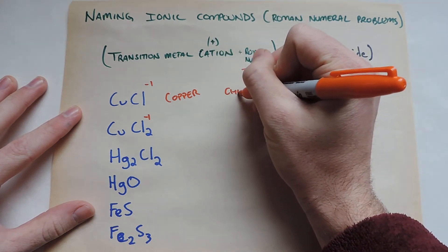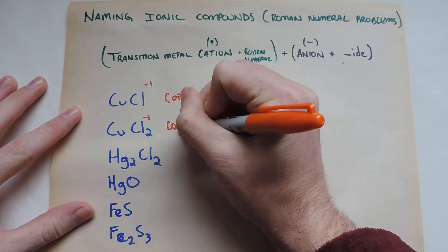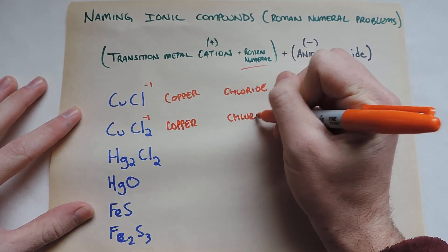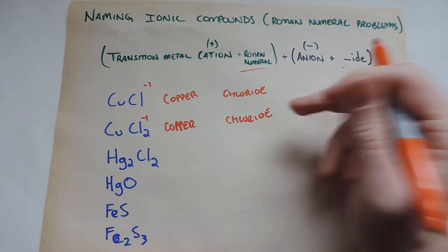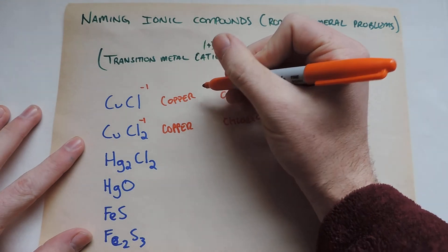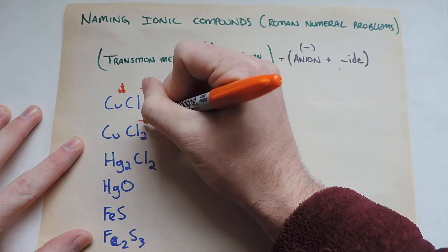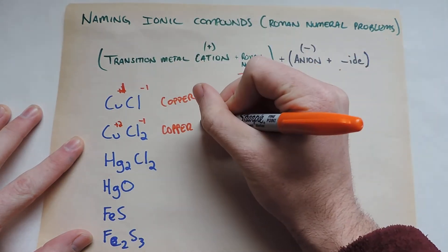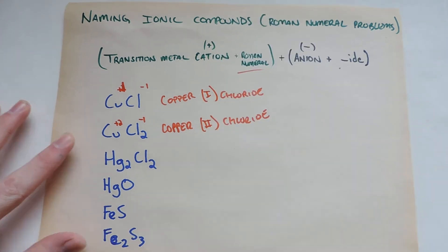So it's just the same as we did before. But here's the difference. Because these are, right now, the exact same, which we can't have that. So what we do is we say, if this is minus one, then this copper has to be a plus one. And if this is a minus one and there's two of them, then there's going to have to be a plus two here. So we express it like this with Roman numerals.